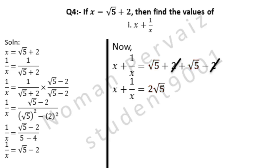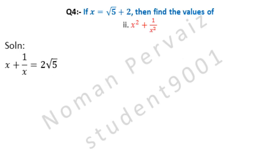This value of x plus 1 over x is taken to part 2 of this question, so stay with us. Question number 4, part 2: if x is equal to under root 5 plus 2, then find the value of x squared plus 1 over x squared. We have started by taking the value of x plus 1 over x from part 1.